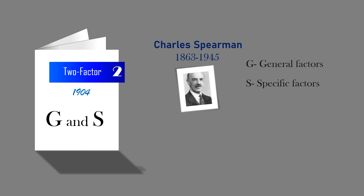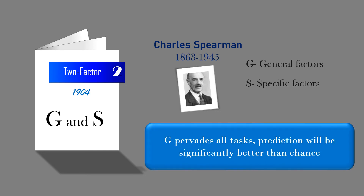The theory explains that if one knows how a person performs on one task that is highly saturated with G, one can safely predict a similar level of performance for another highly G-saturated task. Prediction of performance on tasks with high S factors is less accurate. Nevertheless, since G pervades all tasks, prediction will be significantly better than chance. Thus, the most important information to have about a person's intellectual ability is an estimate of his G.